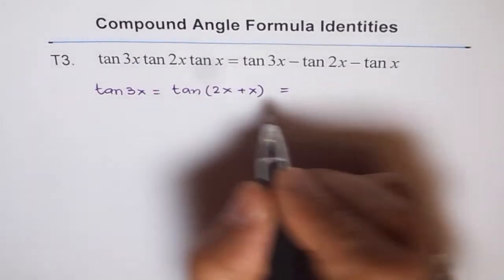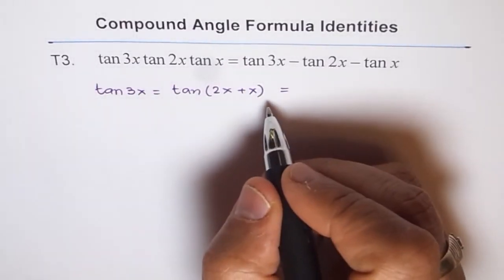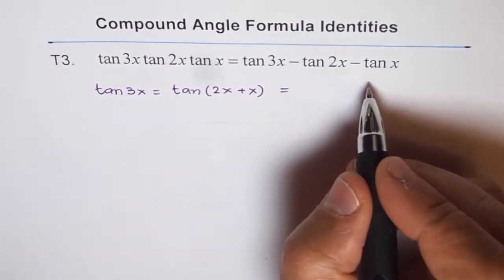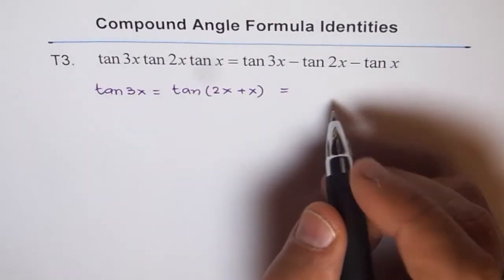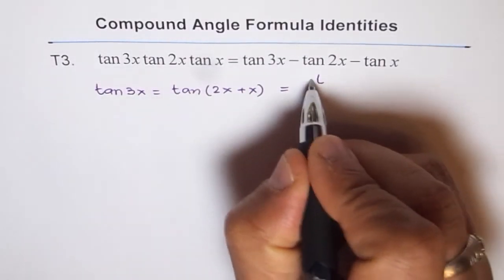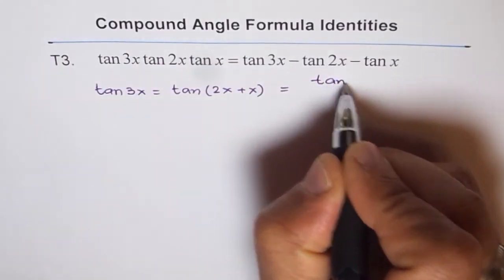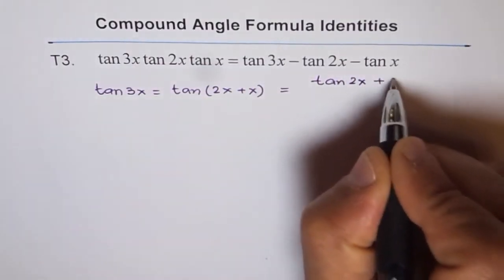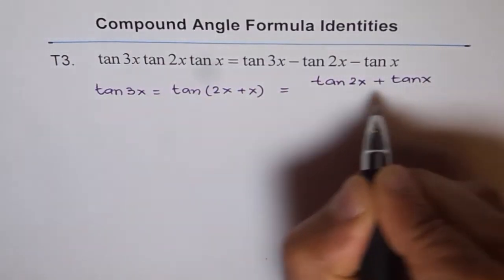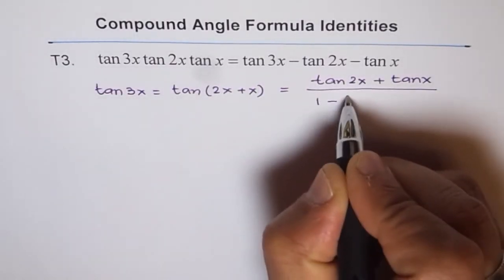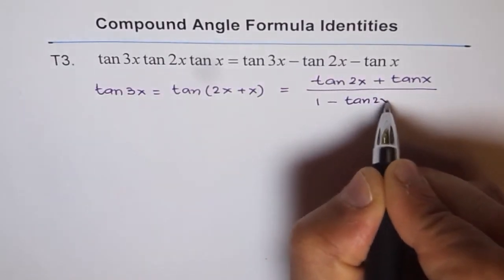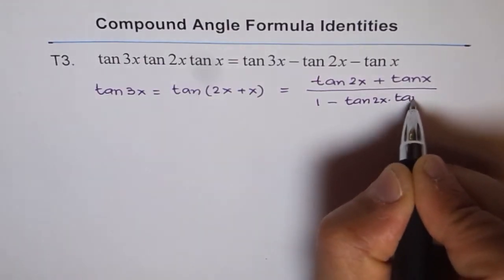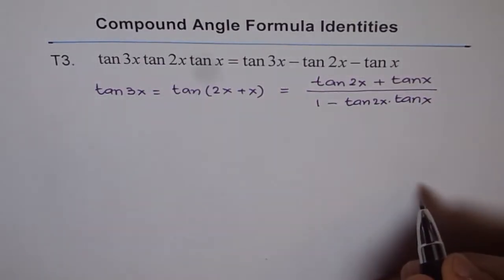Now, tan 2x, we know the formula for tan a plus b, which is tan a plus tan b over 1 minus tan a tan b. So we'll use that. So we'll say this is equal to tan 2x plus tan x divided by 1 minus tan 2x tan x. So that's what we have.